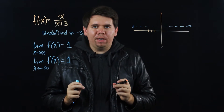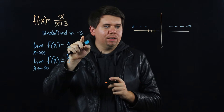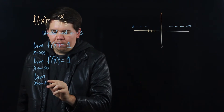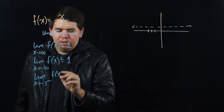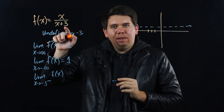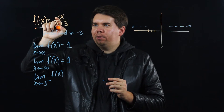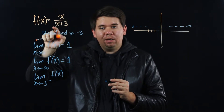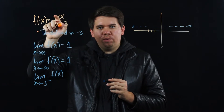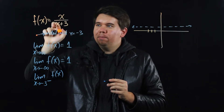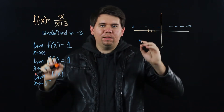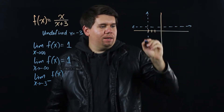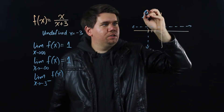There's one other place to think about limiting behavior: the undefined point x = -3. As x approaches -3 from the left, we're plugging in values slightly smaller than -3. The numerator is a little smaller than -3, and the denominator is minus 3 plus 3 — a little bit smaller than 0. Both are negative, so the quotient is positive, but since we're dividing by something going to 0, the result goes to positive infinity.